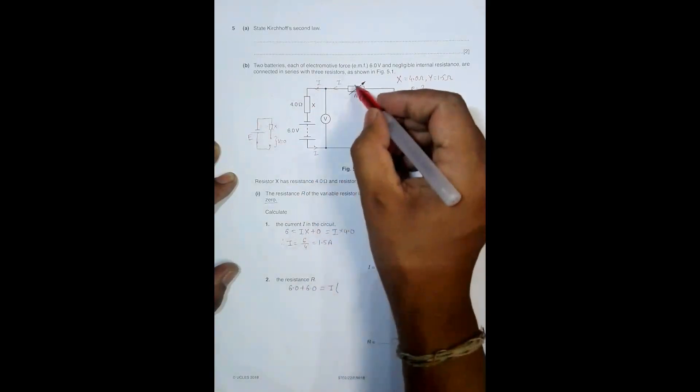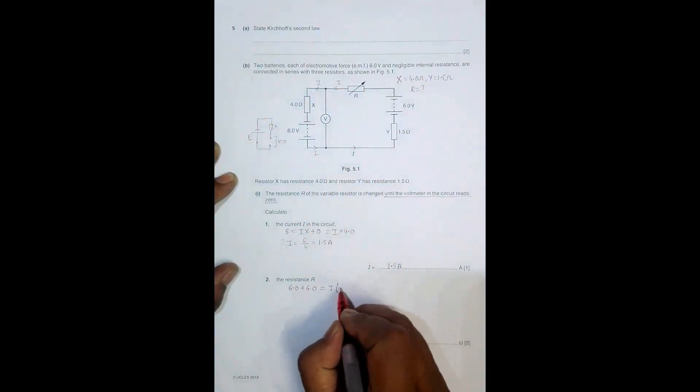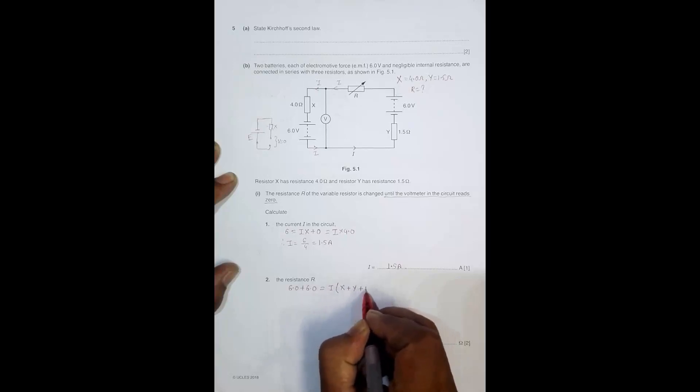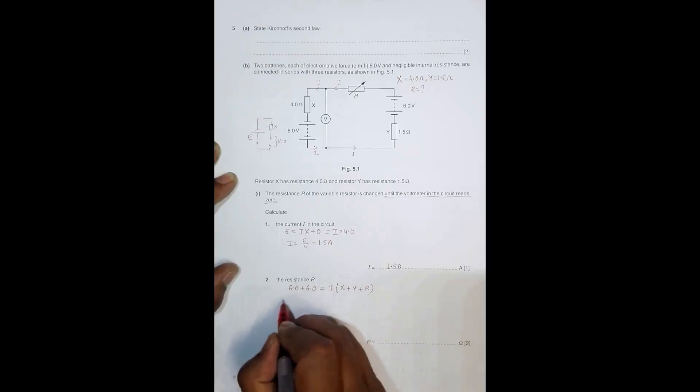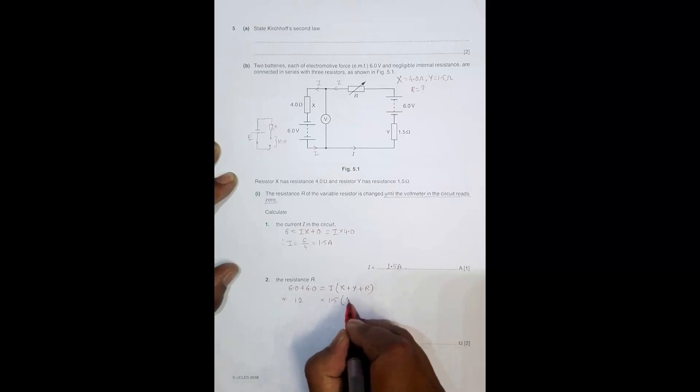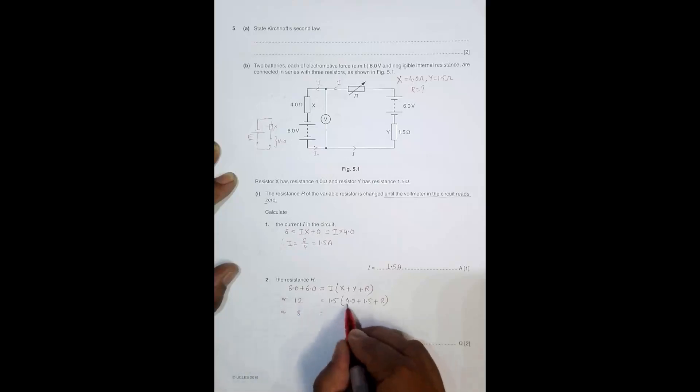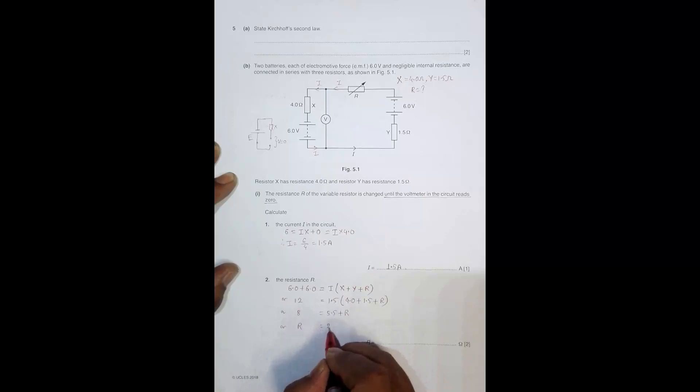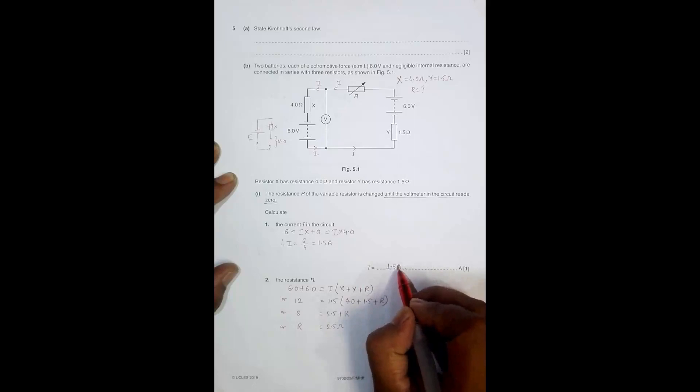The total resistance is X plus Y plus R. So 12 equals I times the total resistance. That's 1.5 times (4.0 plus 1.5 plus R). This gives us 8 equals 5.5 plus R, which gives us R equals 2.5 ohm.